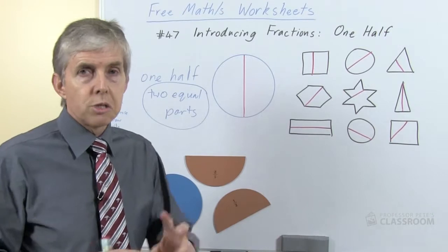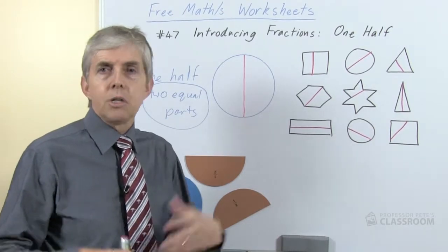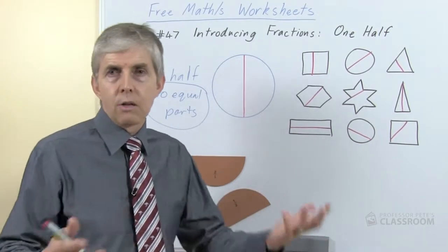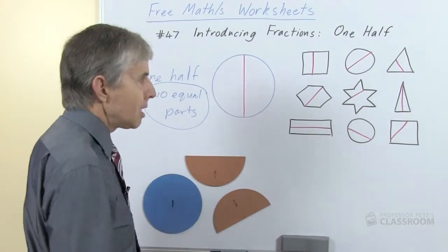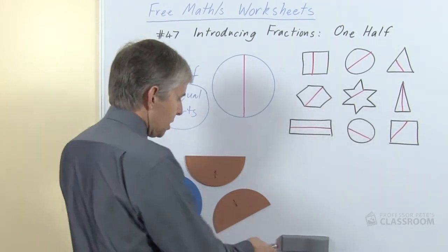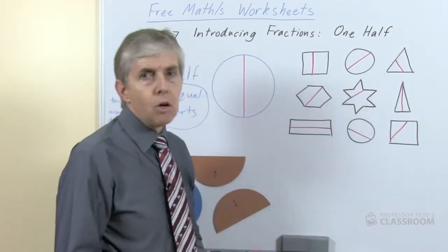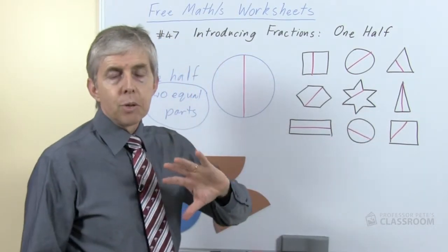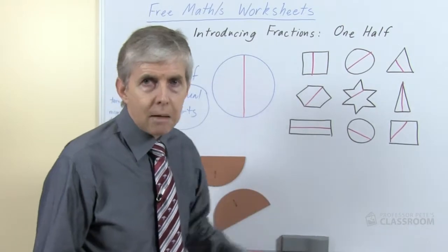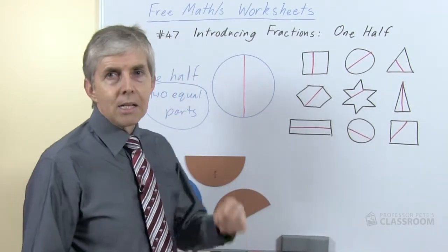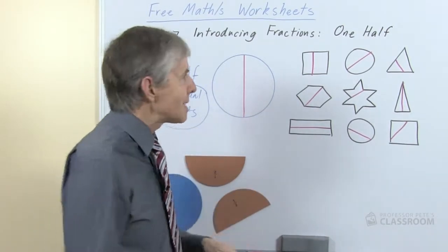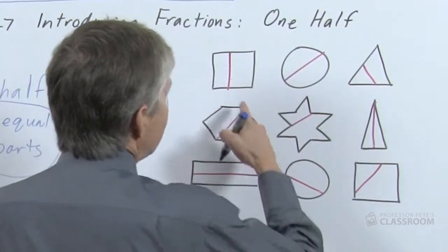If all we ever showed them was two equal parts, they might just assume that half means one out of two instead of one equal part out of two equal parts. So we could show the students examples and say, I want you to put a check mark next to each one that has been divided into two equal parts and then shade the ones that are equal.